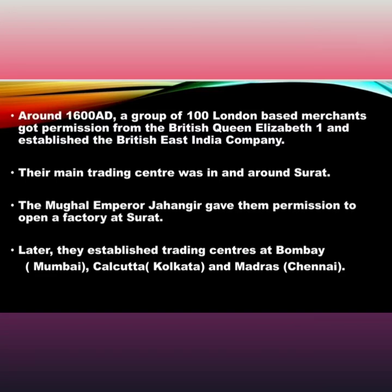The Mughal Emperor Jahangir gave them permission to open a factory at Surat. Later, they established trading centres at Bombay (i.e., Mumbai), Calcutta (i.e., Kolkata), and Madras (i.e., Chennai).